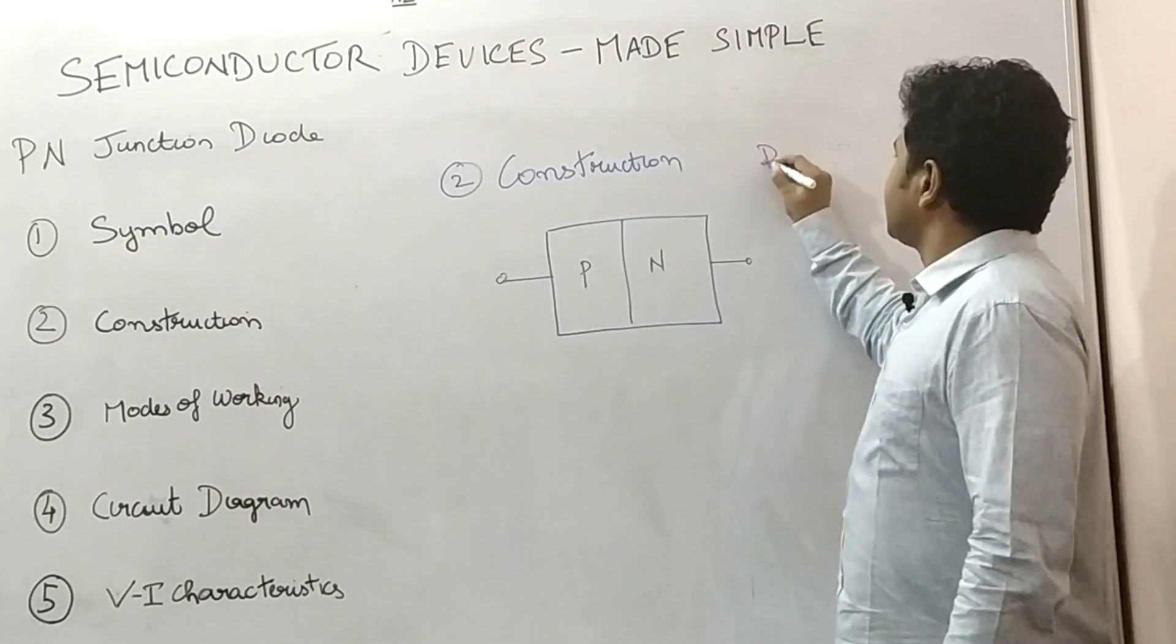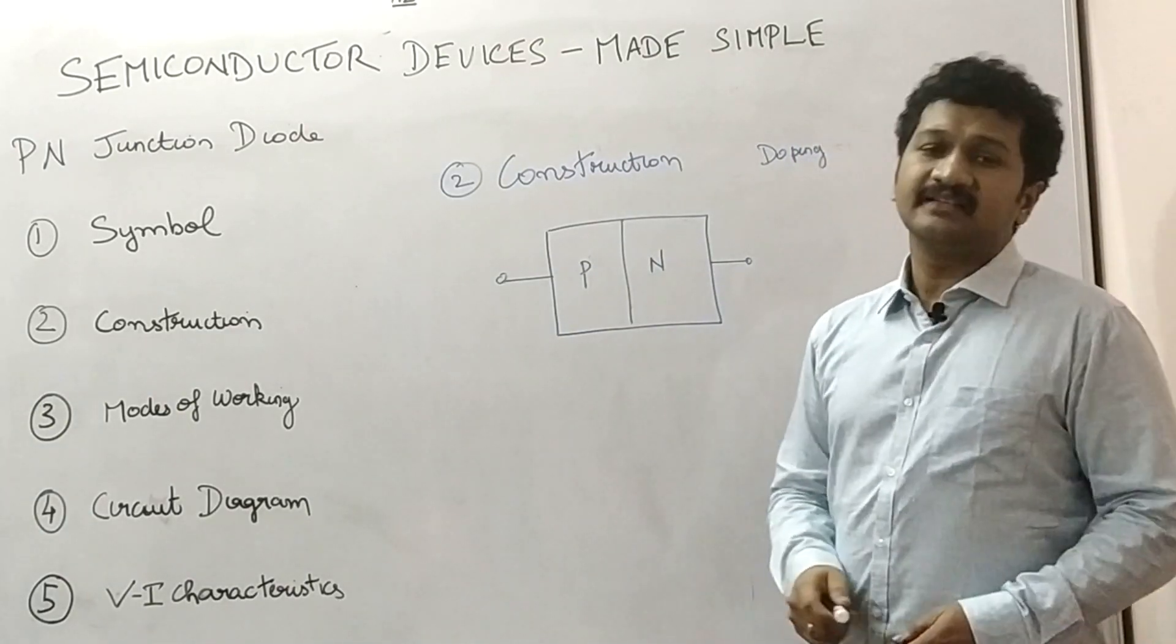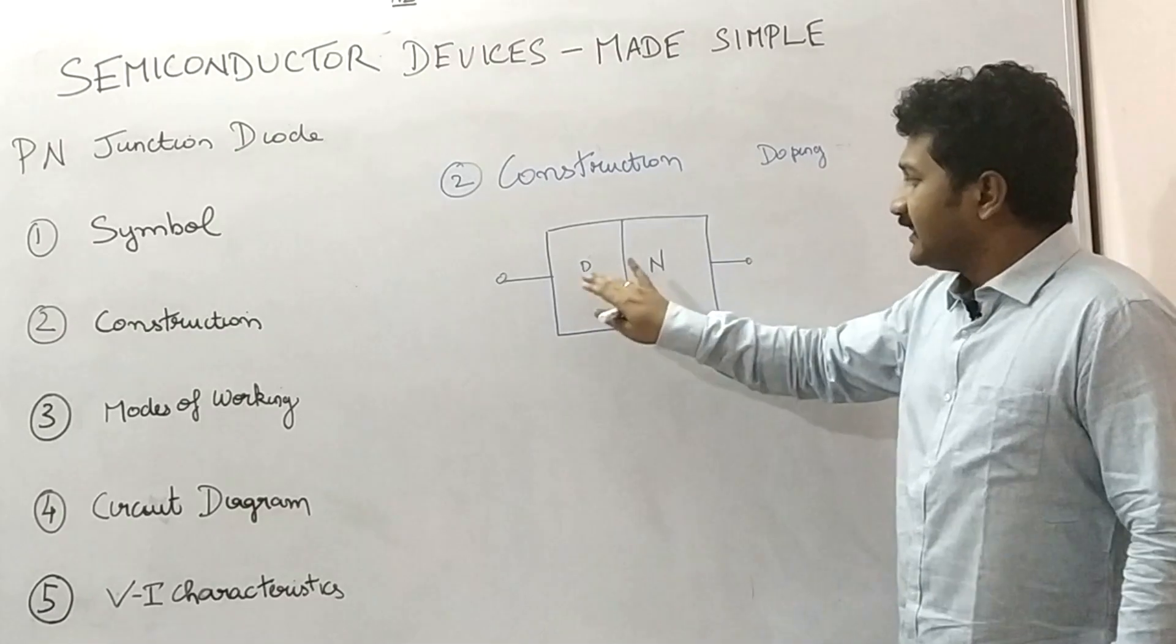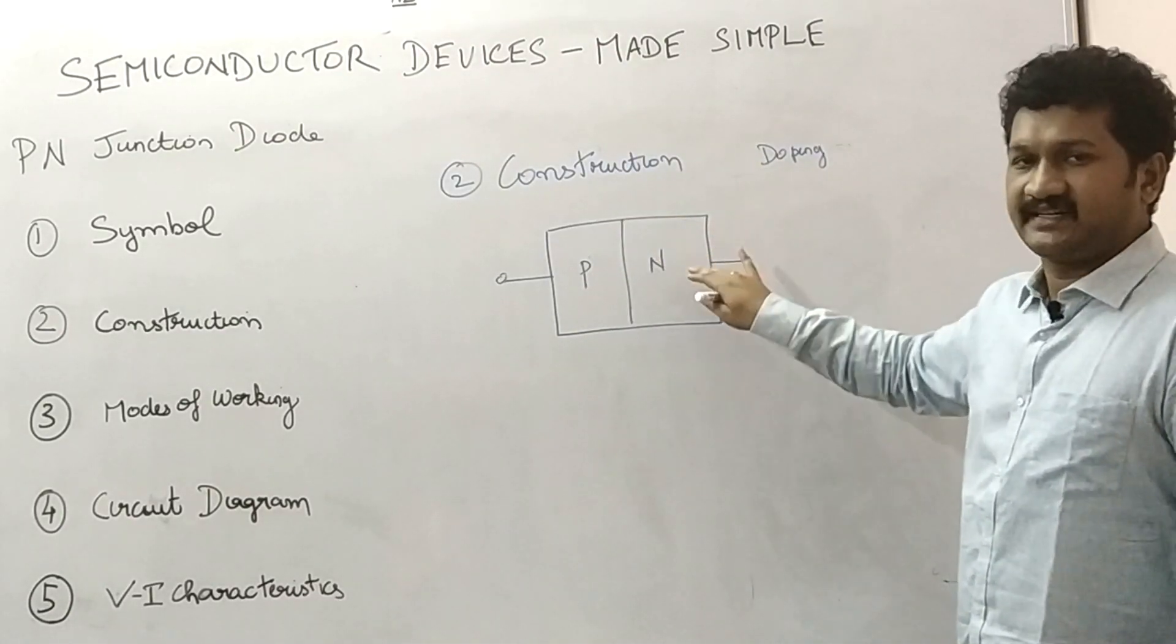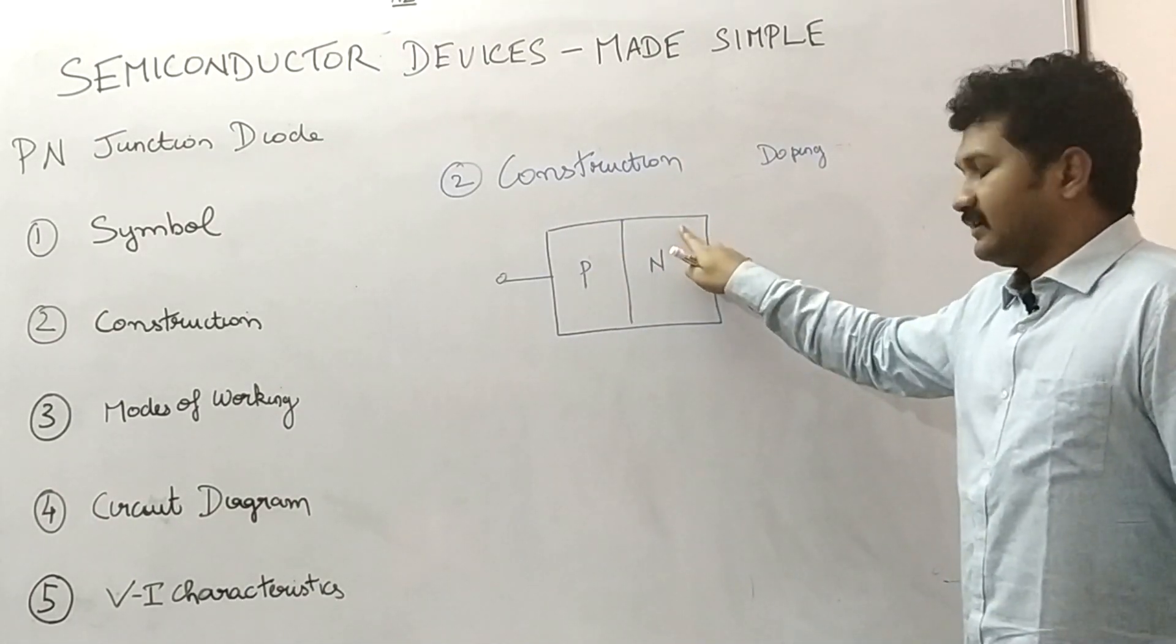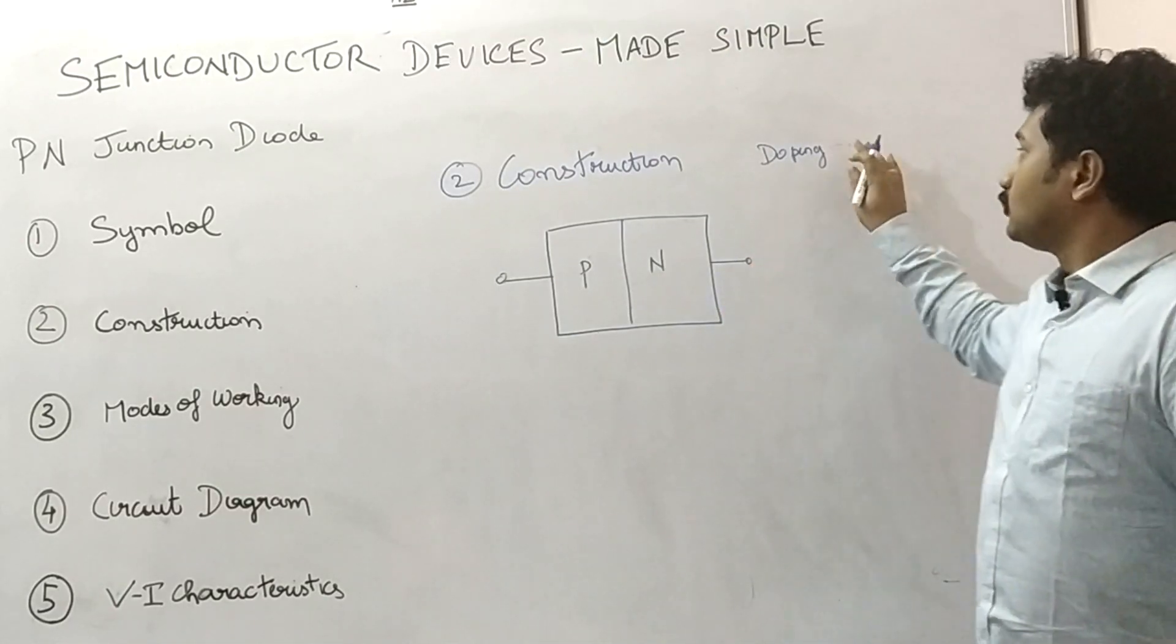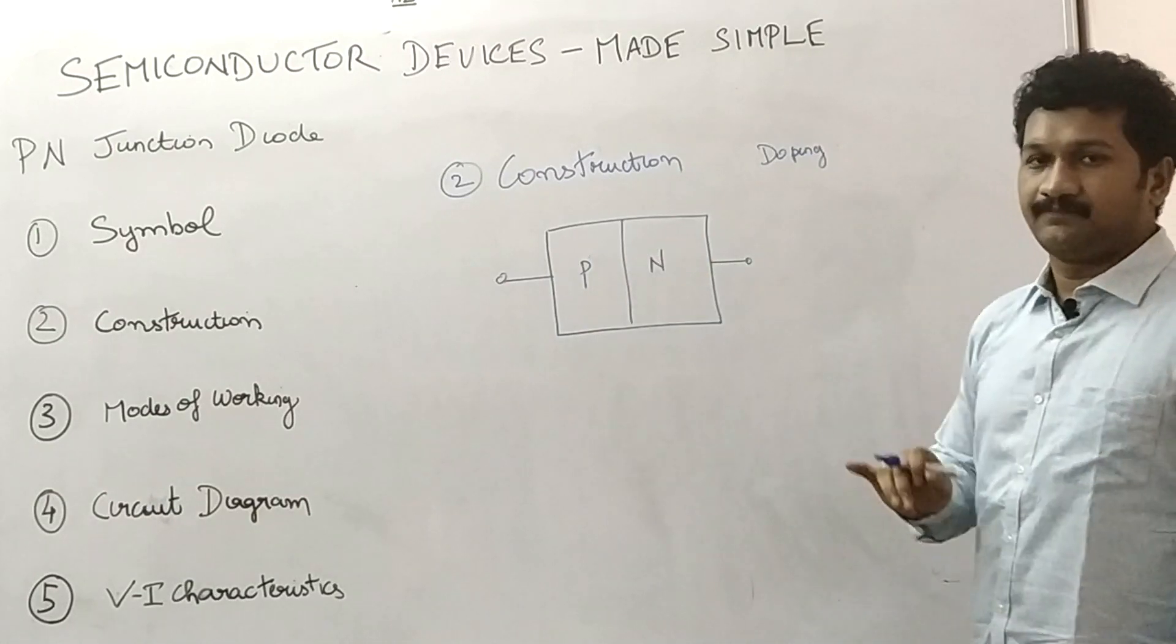There are some of the main terminologies when you talk about the construction of a PN junction diode. First terminology is doping. Very important terminology. Doping is the injection of charge carriers into a layer. Holes injected in P layer and electrons injected in N layer. This injection, other word for injection is called as doping. Mostly doping is a common word used in cases of injection of charge carriers.